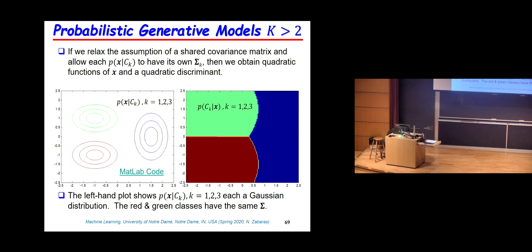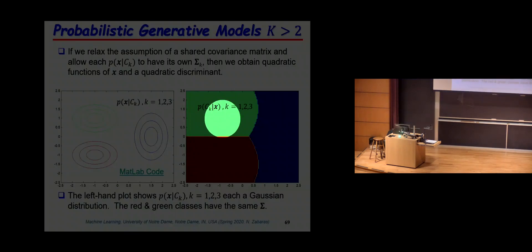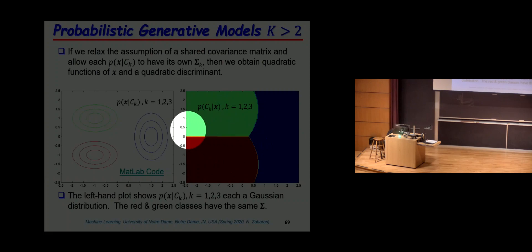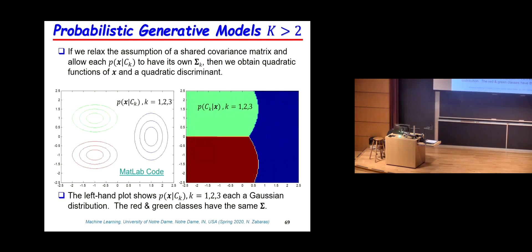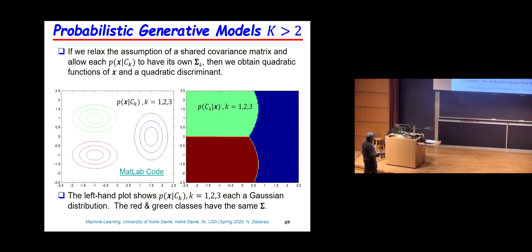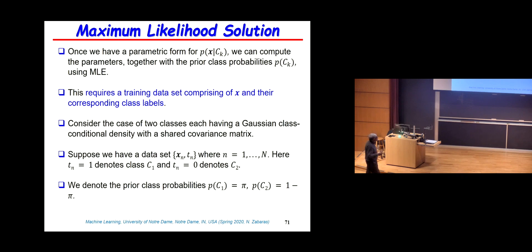In this three-class example, two of the classes have the same covariance — that's why the separating boundary between them is a plane. The other class has a different covariance, which is why you see quadratic boundaries coming from the x-transpose x terms.